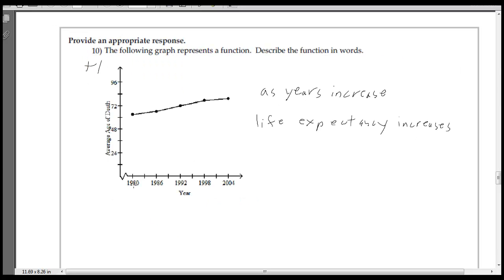On 10, this graph is saying as the years increase, so does life expectancy. So that's pretty much the relationship. As time is going along, people are living to be older.